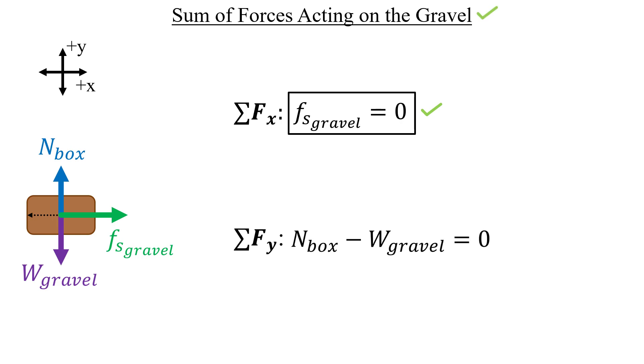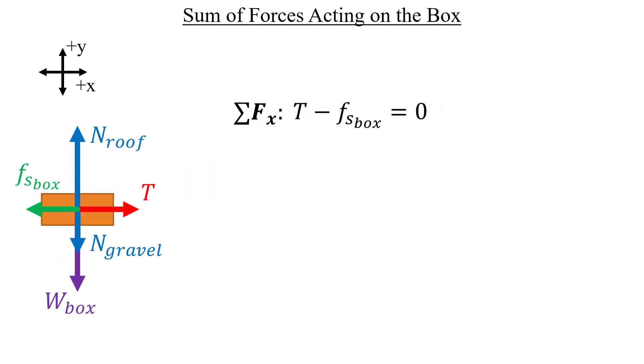In the y direction, the normal force from the box and the weight of the gravel will balance each other out. Go ahead and equate those quantities if you like, but there's nothing we really need to do with that information. So let's move on to the box. In the x direction, the tension and the static friction acting on the box balance each other as well, which allows us to equate them. The sum in the y direction contains three terms, but they don't have any influence on the static friction of the box, at least in terms of us wanting to solve for that quantity. So let's go ahead and pass on these as well and move on.